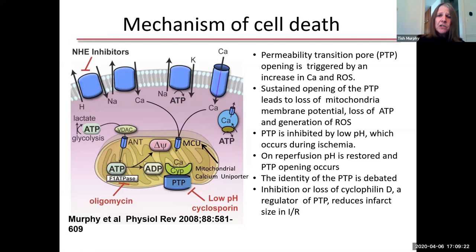Interestingly, the permeability transition pore is inhibited by low pH, which occurs during ischemia. So the PTP is inhibited during ischemia, but on reperfusion when the pH is restored, it becomes activated. This gives a window of opportunity: unlike what happens with sodium-proton exchange inhibitors where calcium gets in during ischemia, since the PTP doesn't open until reperfusion, this gives an opportunity to intervene on reperfusion.